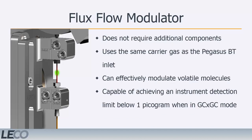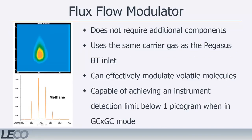LECO's version of the flow modulator is available in the Pegasus BT 4D, termed Flux. The Flux flow modulator does not require any additional components such as dewars, cryogens, or dry nitrogen. Instead, it uses the same carrier gas already used for the GC inlet. Because this method of modulation does not attempt to trap volatile compounds, the Flux modulator can effectively modulate small, volatile molecules. Here you can see data from a Flux system successfully modulating methane. Keep in mind the drawback of a flow modulator is higher detection limits when in two-dimensional mode than that of the thermally modulated units. However, the LECO Pegasus BT Flux is still capable of achieving an instrument detection limit below one picogram when in GC×GC mode.